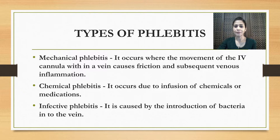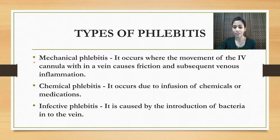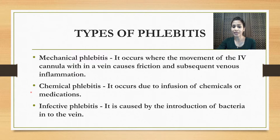Let's talk about the types of phlebitis. There are three types: mechanical phlebitis, chemical phlebitis, and infective phlebitis. Mechanical phlebitis occurs where the movement of the IV cannula within a vein causes friction and subsequent venous inflammation. For instance, if you are going to insert an IV cannula and you notice that the vein is very small and brittle, instead of inserting a 22 gauge cannula you try to insert a 20 gauge cannula — there will be friction between the needle and the vein, ending up in inflammation.